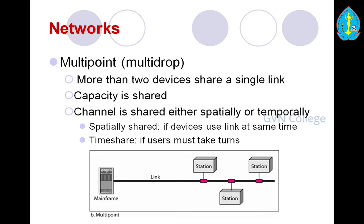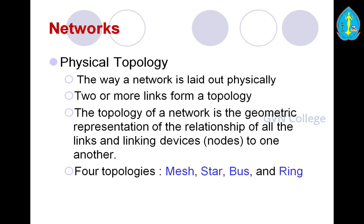The next important concept in networking is topology — the way a network is laid out physically. Two or more links form a topology. The topology of a network is the geometric representation of the relationship of all links and linking devices called nodes to one another. Four basic topologies are used: mesh topology, star topology, bus topology, and ring topology.